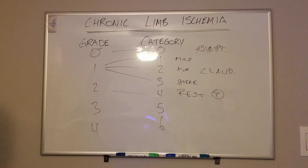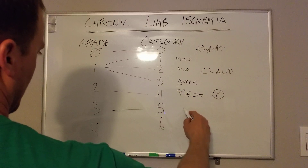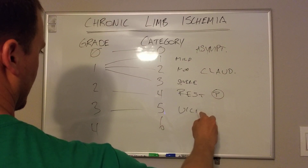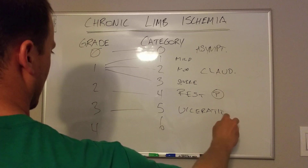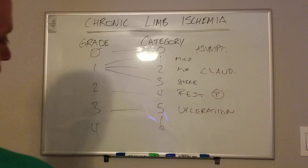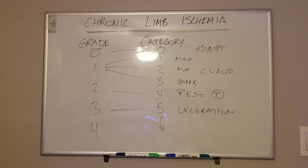Grade three is now pretty bad and advanced disease. This is when you have minor ulcerations or non-healing wounds — like a small arterial ulcer on the end of your second toe. That's classic grade three chronic limb ischemia. These patients have a hard time healing wounds; they're pretty sick individuals with lots of chronic diseases and comorbidities. These are your vasculopaths.